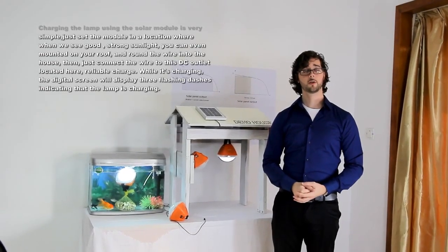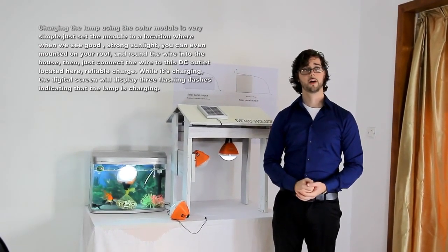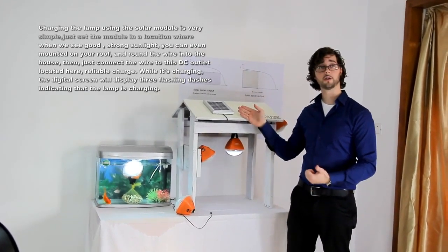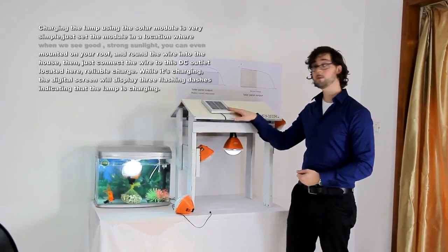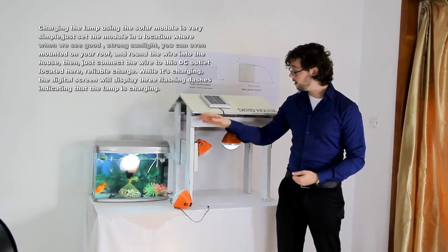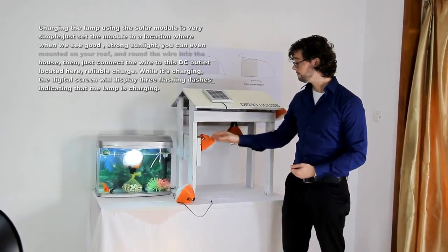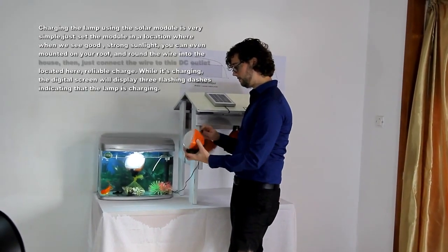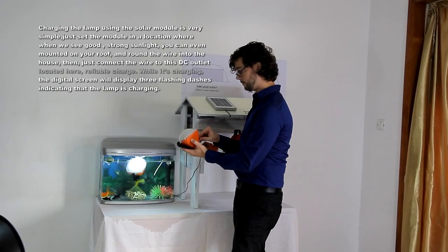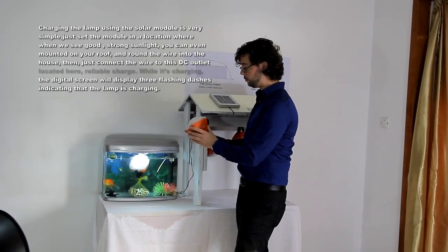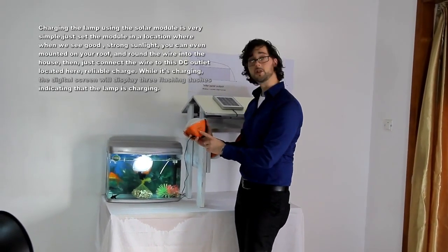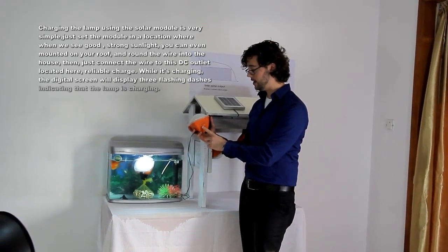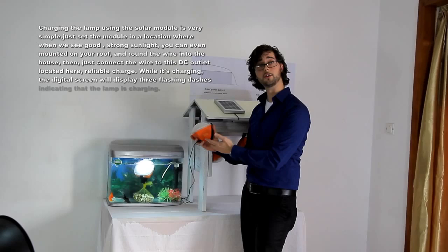Charging the lamp using the solar module is very simple. Just set the module in a location where it will receive good, strong sunlight. You can even mount it on your roof and run the wire into your house. Then just connect the wire to this DC outlet located here, and your lamp will charge. While it's charging, the digital screen will display three flashing dashes, indicating that the lamp is charging.